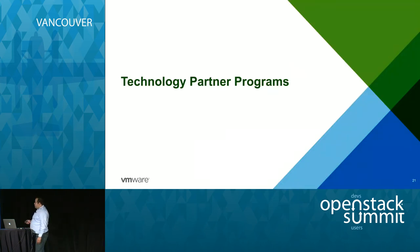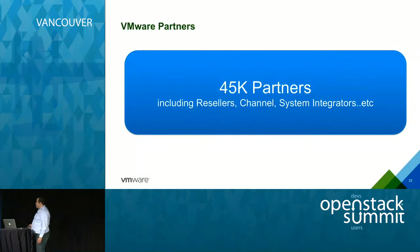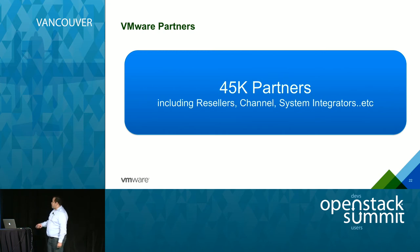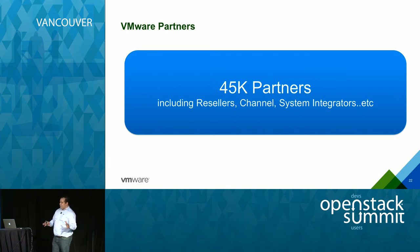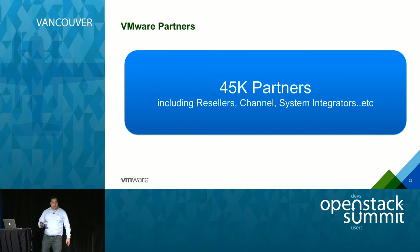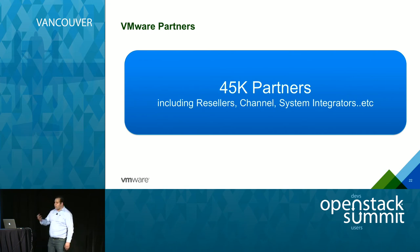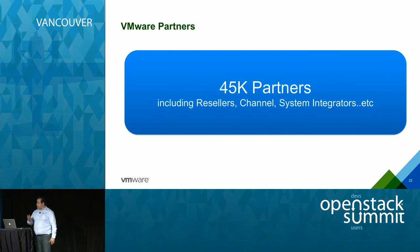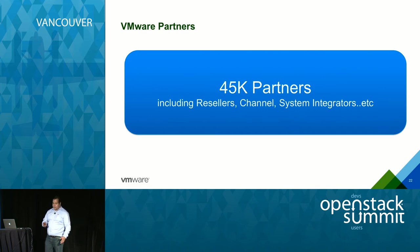We have 45,000 partners between technology partners, channel partners, system integrators, and more. We have a dedicated partner organization that is almost one third of the company. VMware is a channel-led company — most sales happen through channels, so you've likely procured your vSphere infrastructure through one of our resellers or channel partners. That's why the partner ecosystem is very important to us.